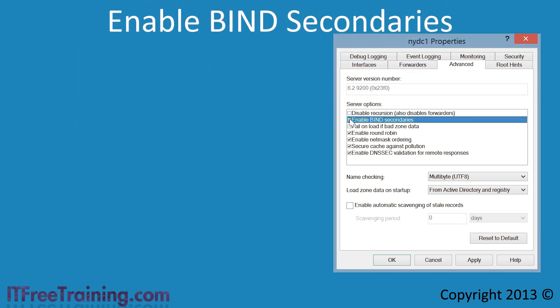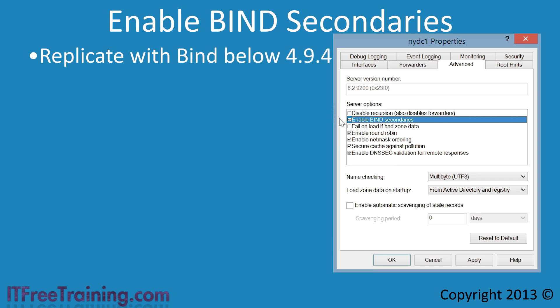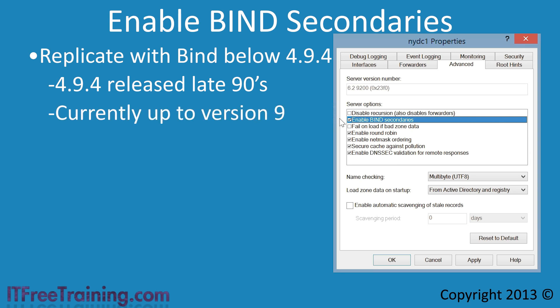The next option is enable bind secondaries. If your DNS server replicates with BIND servers below version 4.9.4, you will need to enable this option. Enabling it disables some fast transfer options for zone transfers, thus slowing down zone transfers. Version 4.9.4 of BIND was released in the late 90s and currently they are up to version 9, with version 10 due to be released in the next year. Unless you are using a very old Unix-based system, it is very unlikely that you will ever need to enable this option.